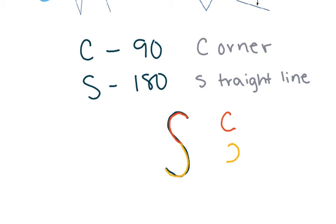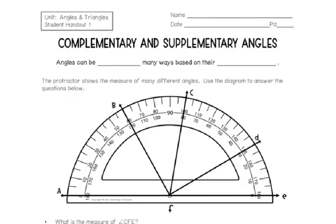So take one of those strategies to remember which is complementary and which is supplementary, and try to get those memorized. Now that we've reviewed the difference between complementary and supplementary angles, we are going to get into figuring out the degrees of different angles. Below we have a tool called a protractor, and here the protractor shows the measure of many different angles. We're going to use that diagram to answer the questions below.